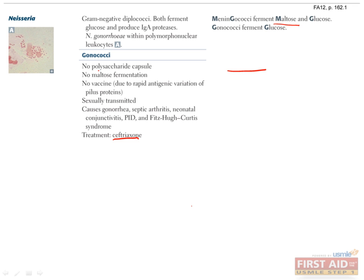A serious complication of untreated gonorrheal disease in females is an ascending infection, whereby gonorrhea spreads to the uterus, fallopian tubes, and ovaries, and is known as PID, or pelvic inflammatory disease. Symptoms of PID consist of abdominal pain, cervical motion tenderness, dysuria, fever, nausea, vomiting, and chills. PID is dangerous because it can lead to tubo-ovarian abscess and scarring with increased probability for infertility or ectopic pregnancy.